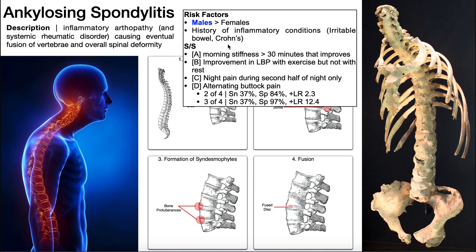At the root of this, you have chronic inflammation. What they find in blood tests of people with this condition is elevated levels of rheumatoid factor. Rheumatoid factor is what we find in rheumatoid arthritis, which is also related to inflammatory conditions like IBS and Crohn's disease. So those are the two major risk factors: being male, particularly younger, and also having inflammatory conditions.